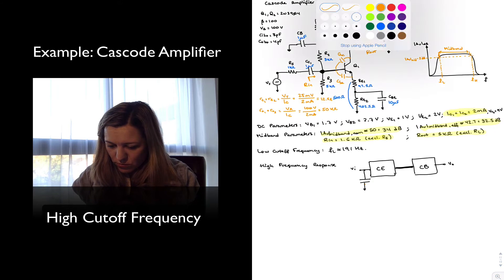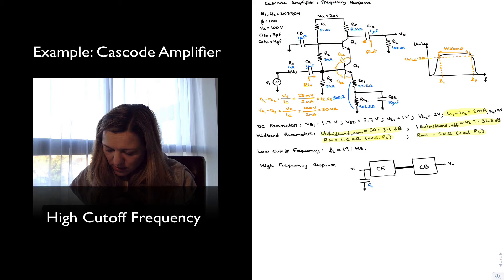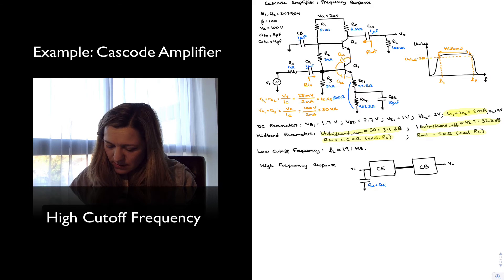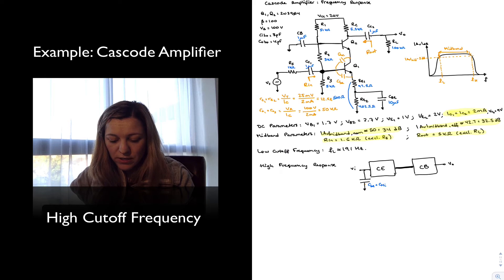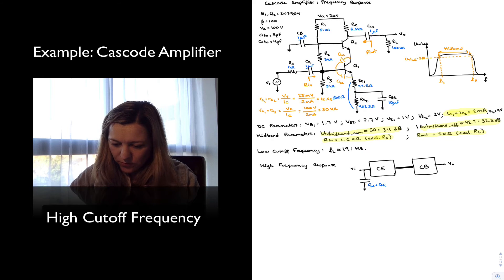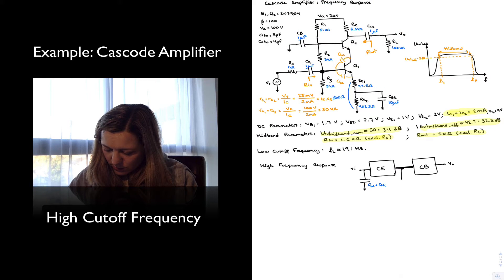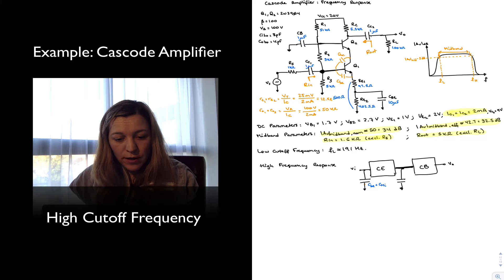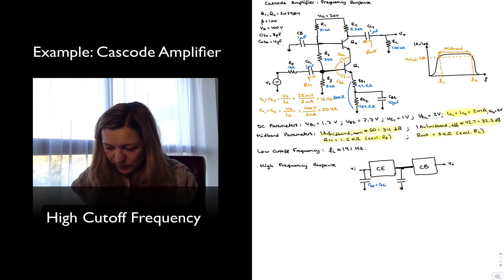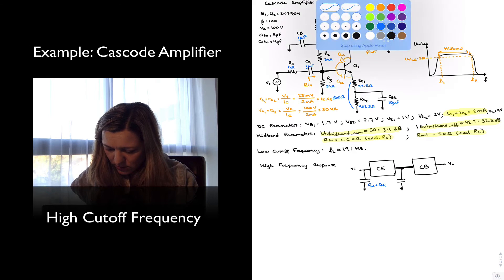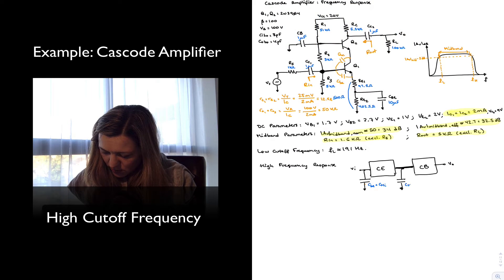So I'm going to have my capacitor C1 calculated as CBE plus CMI, the Miller input capacitance, which is just the reflection of CBC at the input. That's for my first capacitor. Then my CBC is going to appear at the output as the Miller output capacitance.